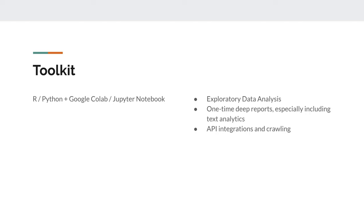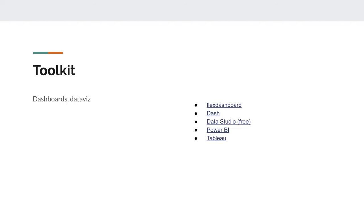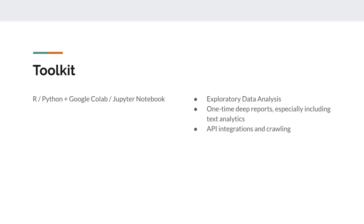But when you need deep analysis and advanced techniques like text analytics, it's usually not possible in SQL — that's why you use code. R is a great tool for this. I also use R and Python for API integrations and web crawling — for example, getting competitor data or mailing service statistics. I can also grab data from our database and send it out to an external API.